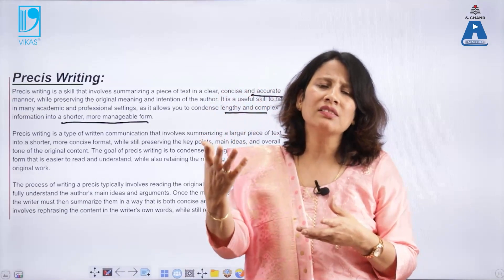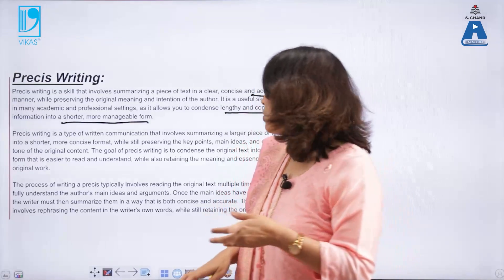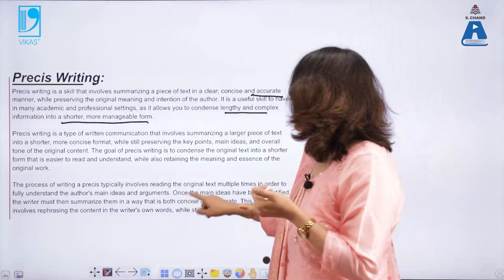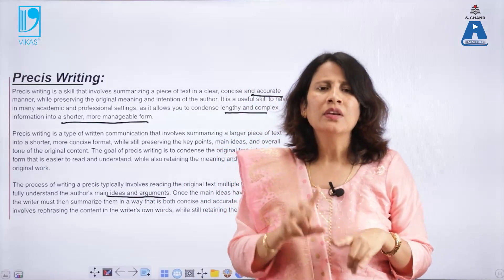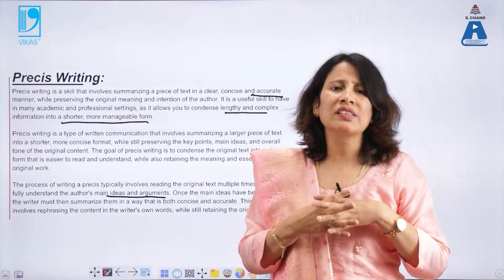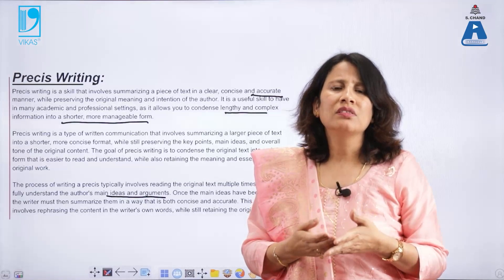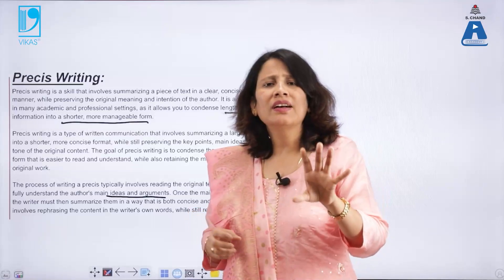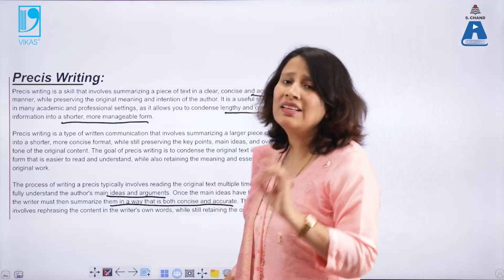Even without reading the original text, a reader should get the gist of the entire document from your Précis. To begin, you must read the original text multiple times in order to fully understand the author's main ideas and arguments. For example, if given a document six pages long that must be summarized into two pages, you cannot achieve that until you have read the original document at least several times. Once the main ideas have been identified, summarize them in a way that is both concise and accurate.